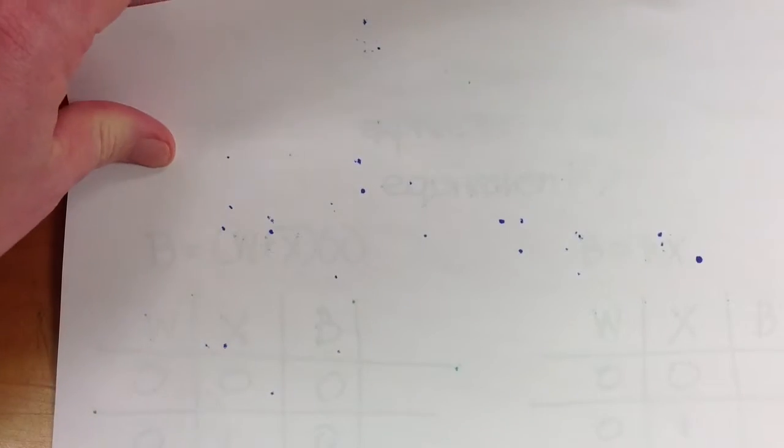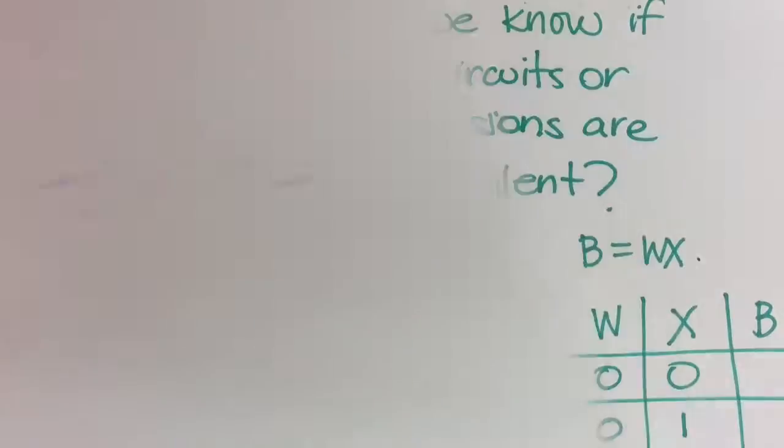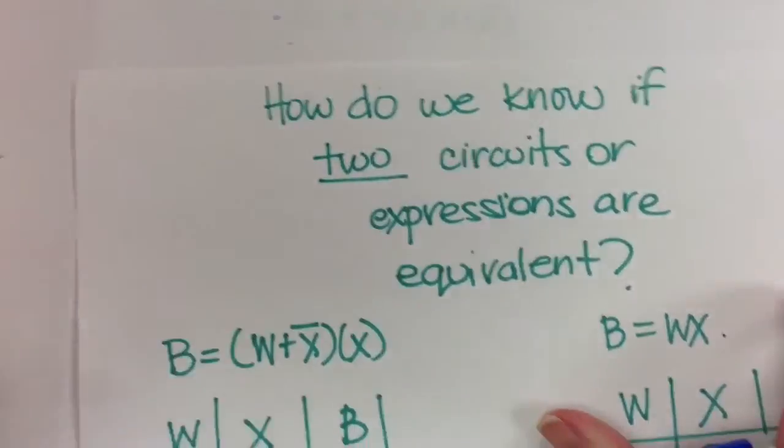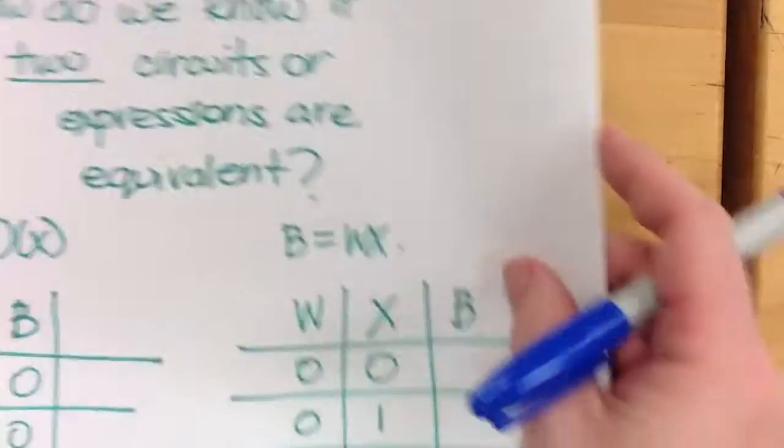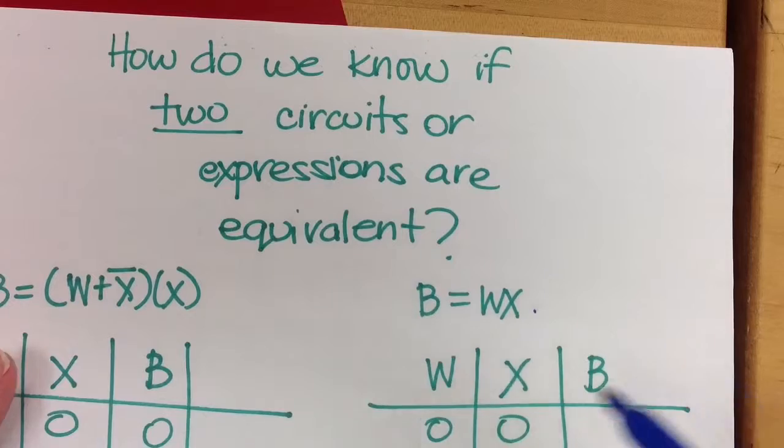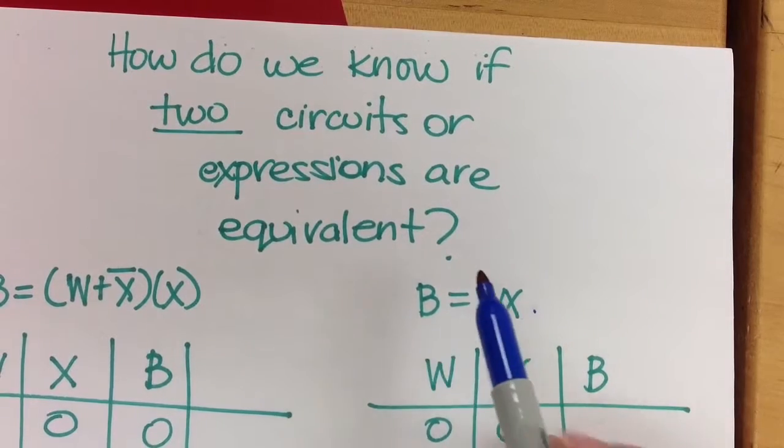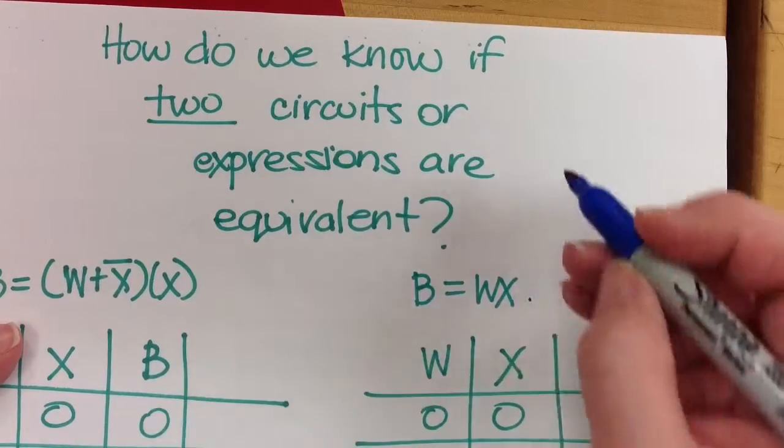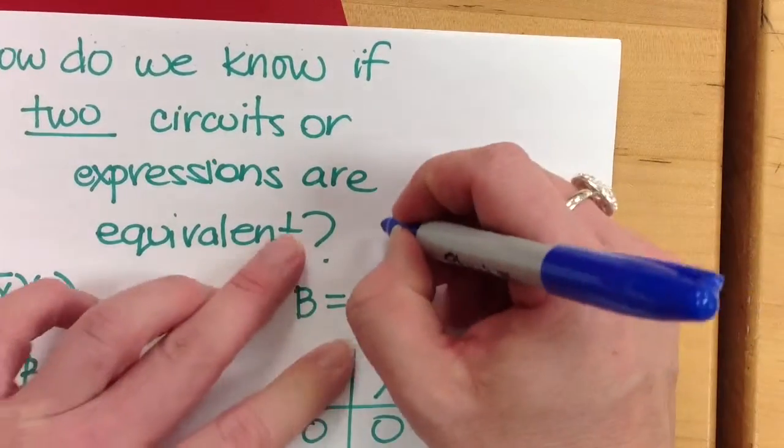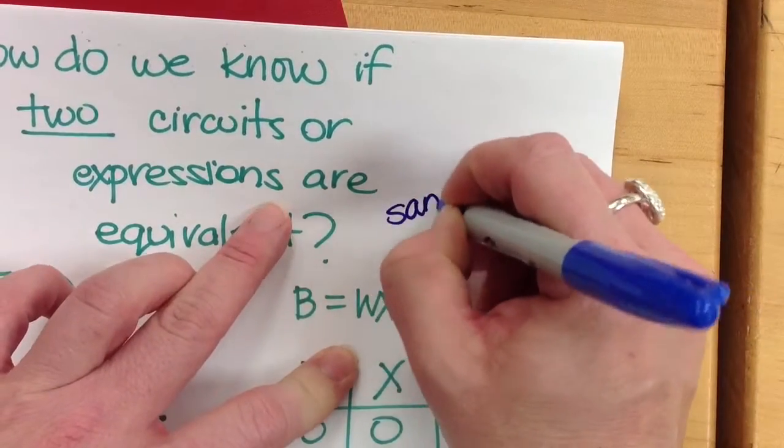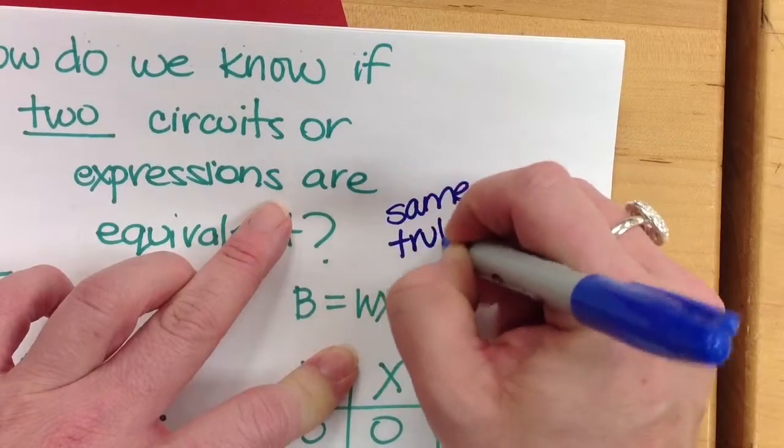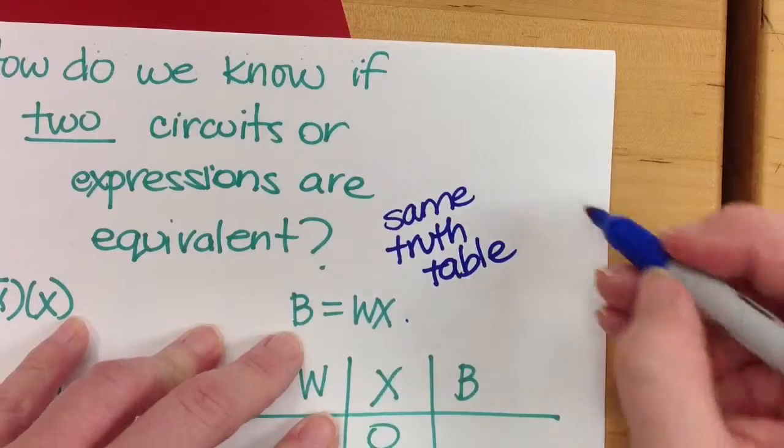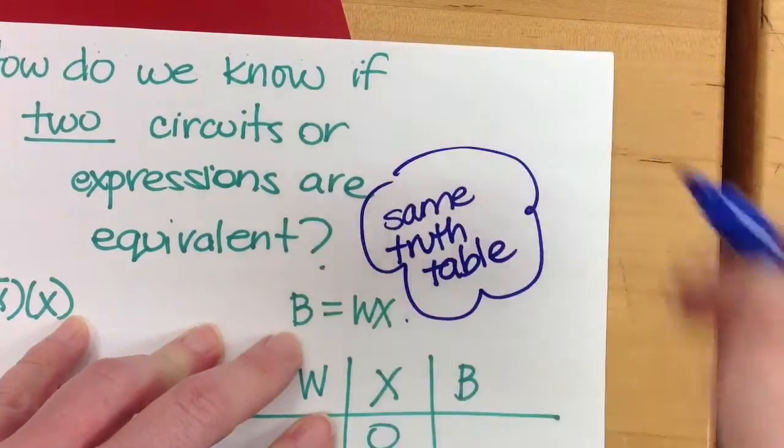Okay. So now if we look at, let's just think a little bit about how do we know when two circuits, or expressions or whatever way we have to represent them, are equivalent. We say they're equivalent if they have the same truth table. They are equivalent.